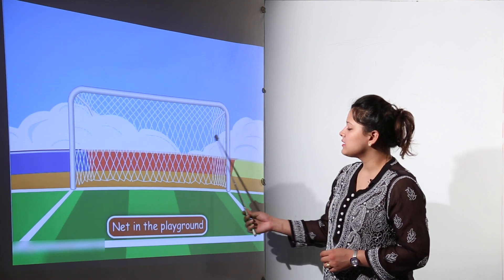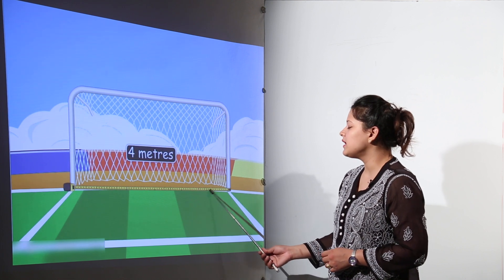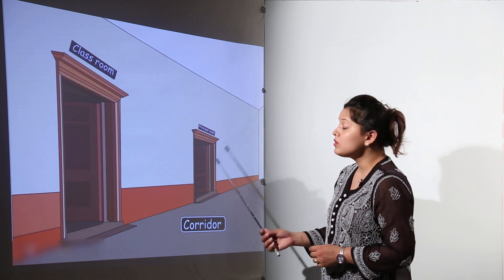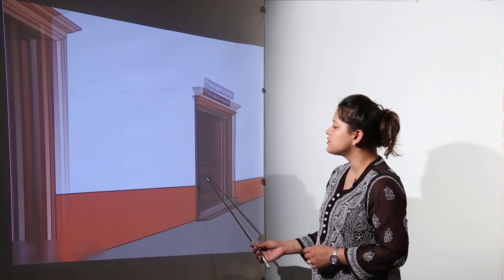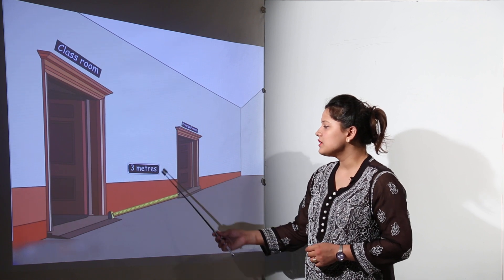Here is a net in the playground. We can measure its length by using the meter scale. Here that is 4 meters. We can also measure the length between the classroom and the principal's room and that is 3 meters.